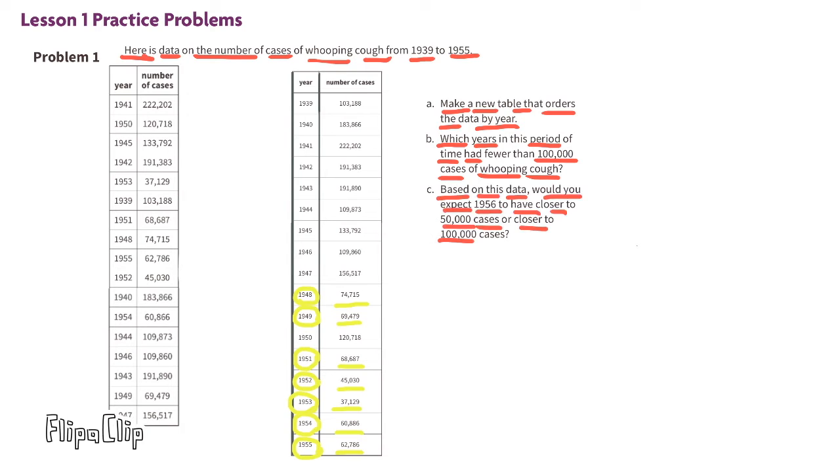Part c: Based on this data, would you expect 1956 to have closer to 50,000 cases or closer to 100,000 cases? By looking at the data, I can see the number of cases decreases over time, so I would expect that 1956 would most likely have closer to 50,000 cases than 100,000 cases.